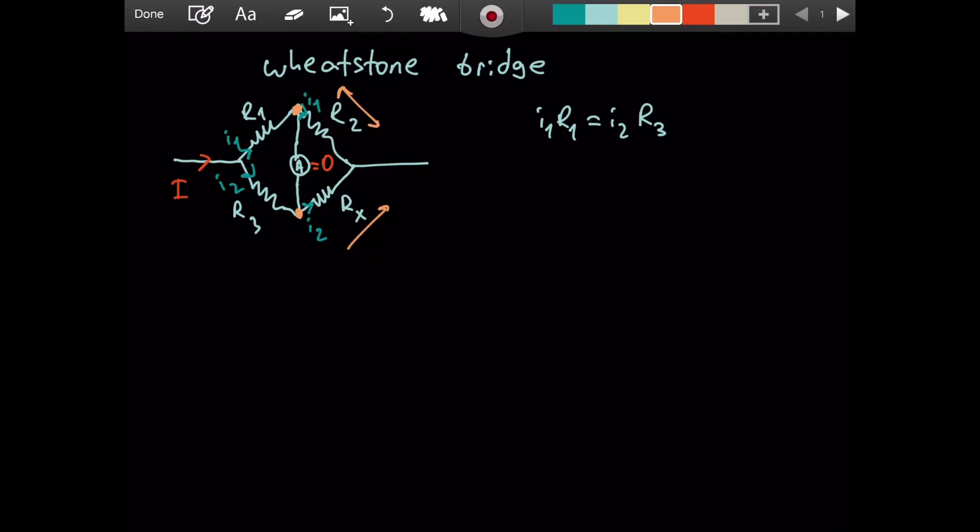Because they are connecting points that have the same potential. As we discussed, this and this has the same potential. They all connect here. So the potential difference, the voltage will be the same in both directions. Which means we can also say I1 R2 equals I2 Rx.